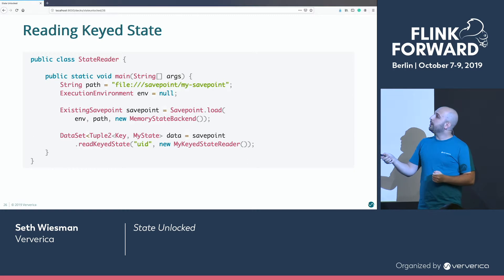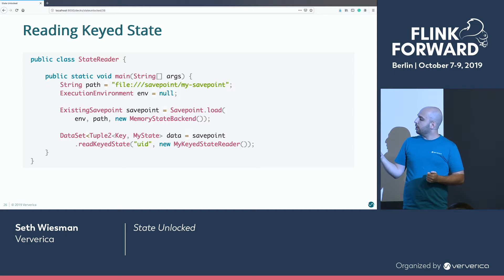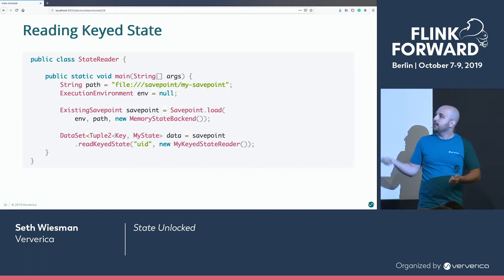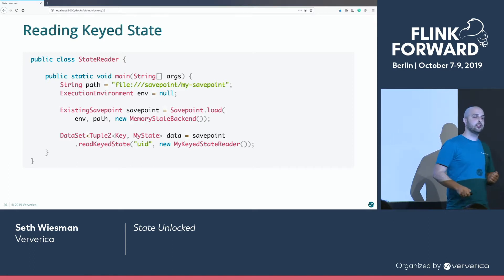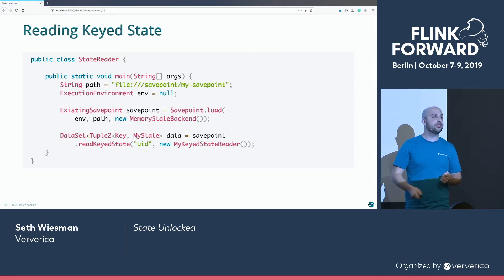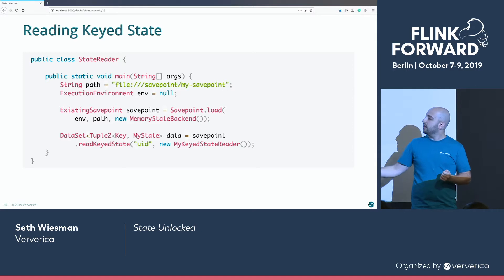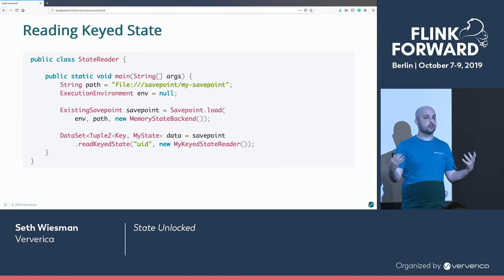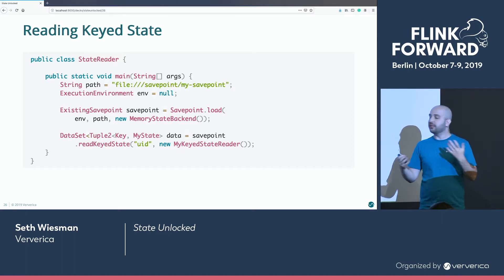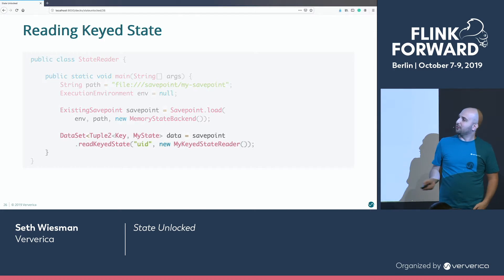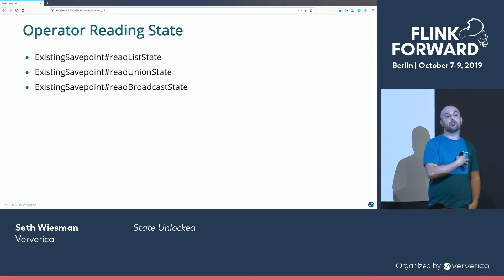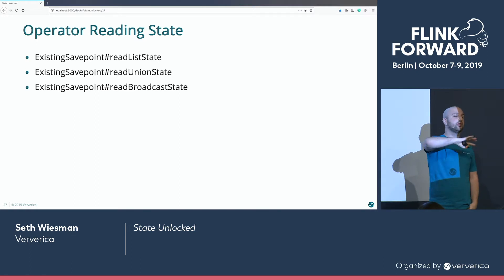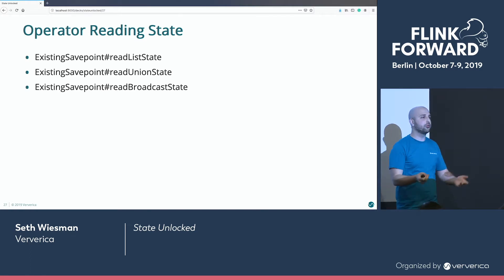So now let's load our savepoint. We have the full path to our savepoint taken in production. We have our execution environment, the path, and our state backend. We then read our keyed states, picking our operator based on its UID — the UID is that namespace — and our reader reads from a particular table. We now have a dataset of our states. Do whatever you like — read it, transform it, write it back out, analyze it, find something interesting. Along with supporting keyed state, we also support the most commonly used operator states: list states, union state, and broadcast states. So if we want to read out that metadata, or read out what offsets we're on, we can do that as well.